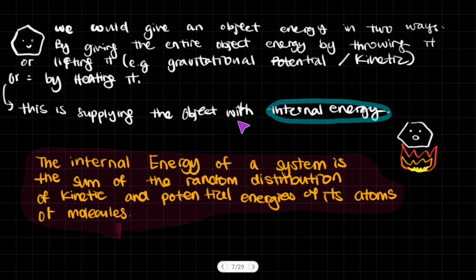This is supplying the object with internal energy, and it is what it suggests it is. We say that it kind of disappears—it's like it's going inside of the object, and I guess it kind of is because it changes the way that the molecules inside the object move. And that's why it's called internal energy.